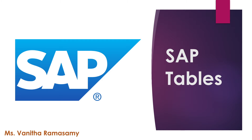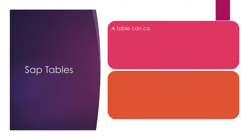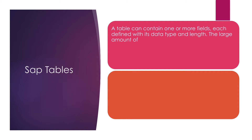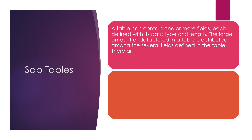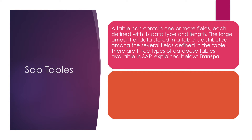Hi friends, today we are going to see about SAP tables. Generally, tables are used to store the data — same purpose here. A table can contain one or more fields, each defined with its data type and length. The large amount of data stored in a table is distributed among several fields. There are three types of tables available in SAP: transparent table, pooled table, and cluster table.